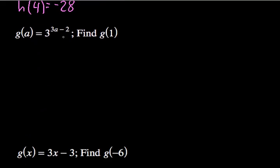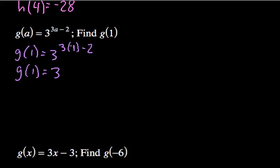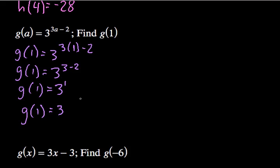This next problem may look a little bit harder because we've got an expression for an exponent. But don't let it fool you. 1 is simply the input into the function. So, wherever we see a, we're going to write a 1. g of 1 equals 3 raised to the power of the quantity 3 times the input minus 2. The input was 1, so I write a 1 in that parenthesis. We multiply before we subtract: 3 times 1 is 3, and we subtract 2 — 3 minus 2 is 1. So we have 3 to the first. The final answer is g of 1 equals 3.